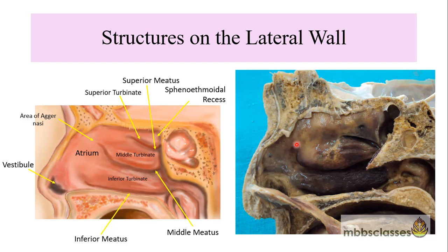Another important relation to be remembered is the choana. The roof of the choana lies at the level of the posterior end of the middle turbinate. The Eustachian tube opening lies in the nasopharynx at the level of the posterior end of the inferior turbinate at around a distance of one centimeter.